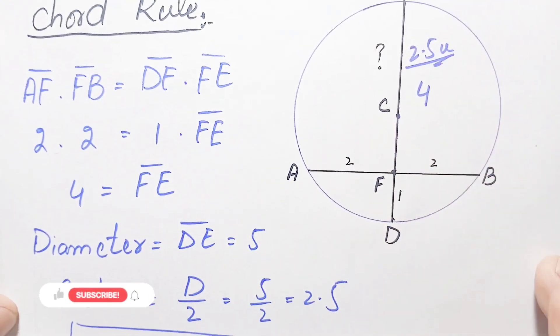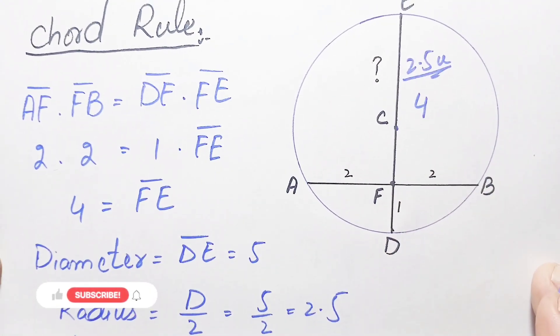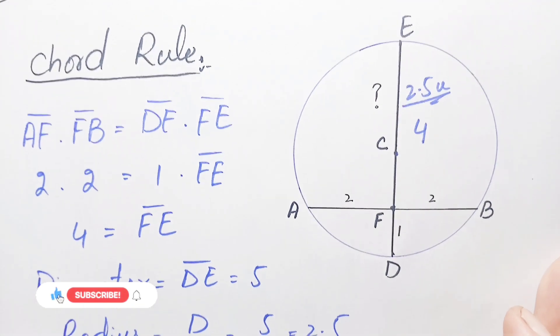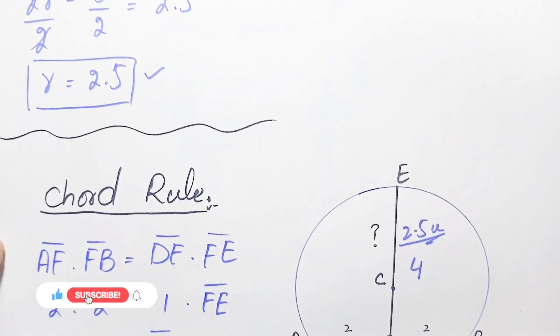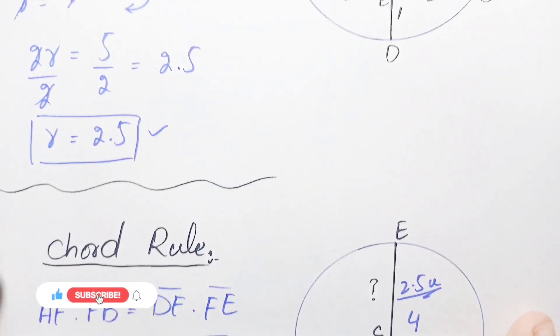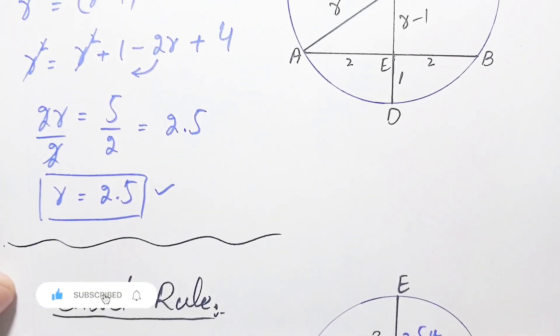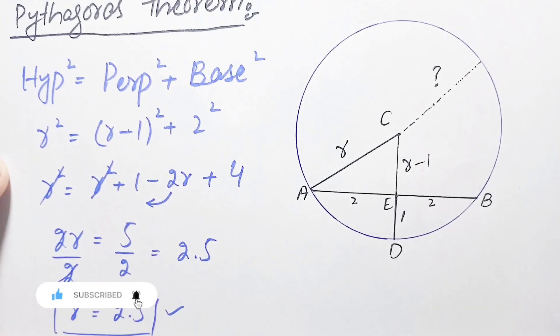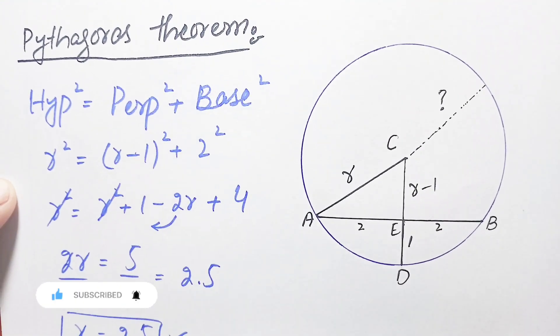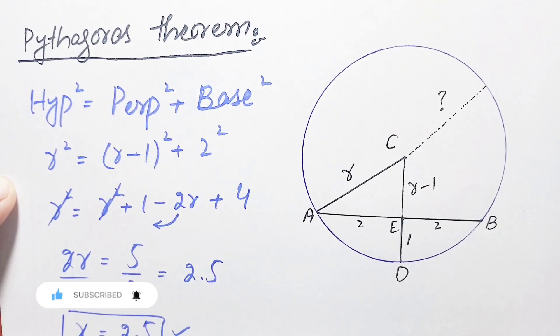So our required answer, the radius from C to D, is 2.5 units. Don't forget to subscribe to our YouTube channel for more interesting and step-by-step math videos. Thanks for watching.